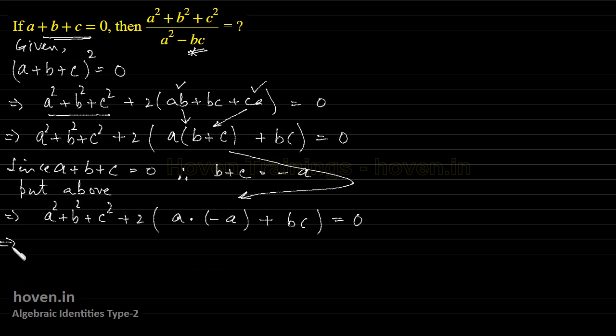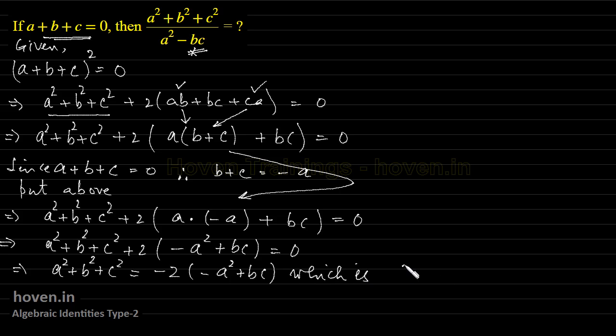Now which implies a square plus b square plus c square plus 2, this will be minus a square plus bc equal to 0. Now which further implies that a square plus b square plus c square, now take this to the other side is equal to minus 2 into minus a square plus bc which is 2 into a square minus bc. Adjusting this minus sign.